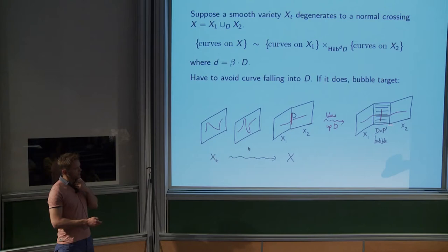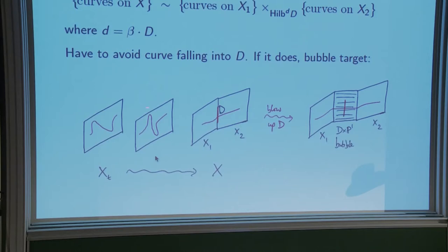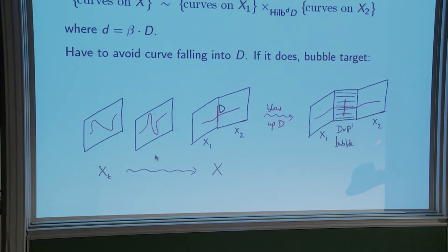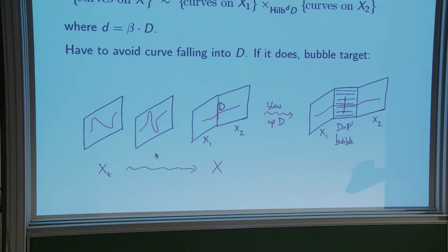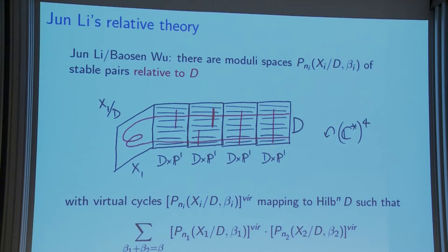You get a picture with a P1 bundle over D. We're not just counting curves in X₁ and X₂ but also curves on objects like this — and if the curve tries to lie in D again you bubble again. This is like stretching the neck in Donaldson theory. There's a C* action scaling the P1 fibers, and you divide by that so curves related by the C* action are considered the same. Jun Li did this for Gromov-Witten theory, and with his student Bozhen Wu did this in stable pair theory.